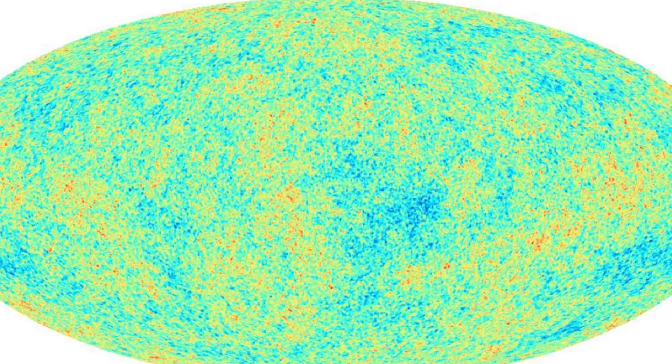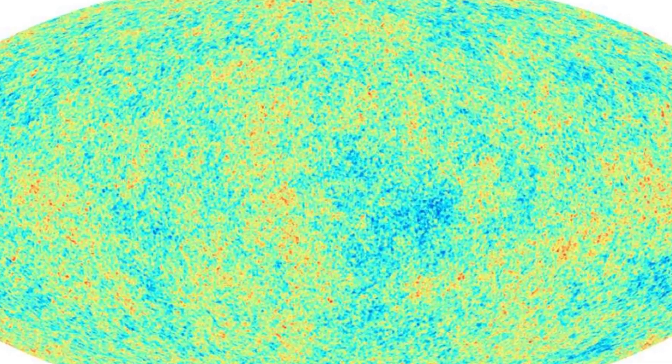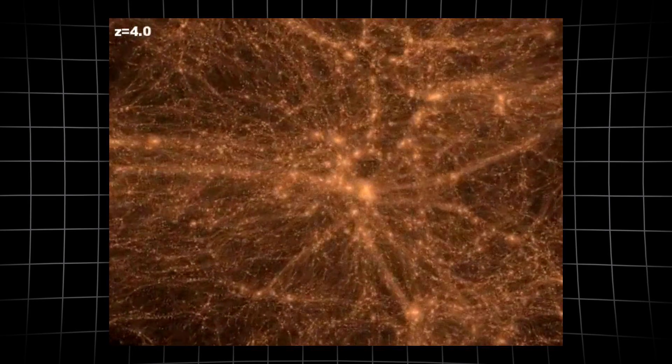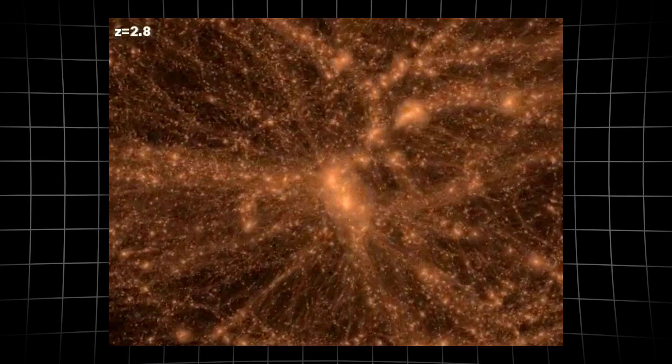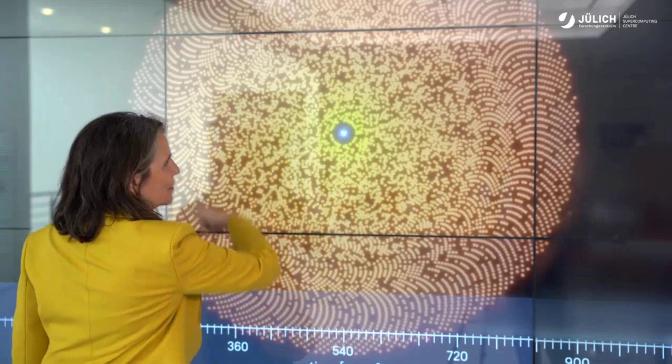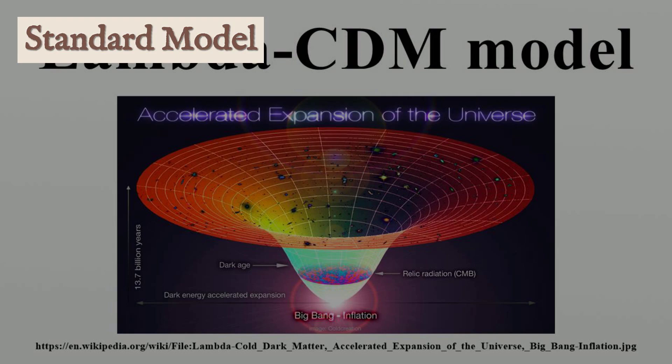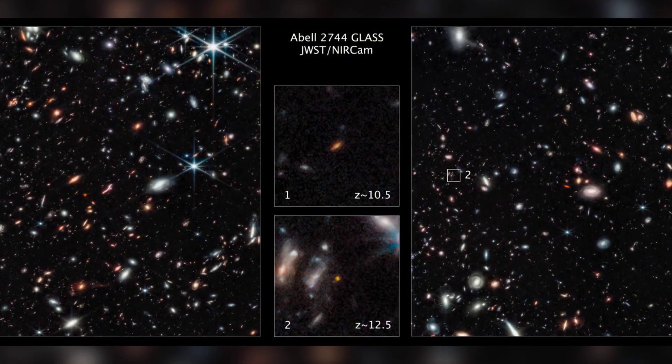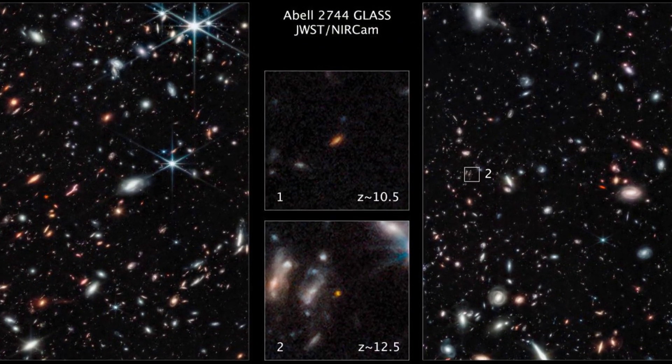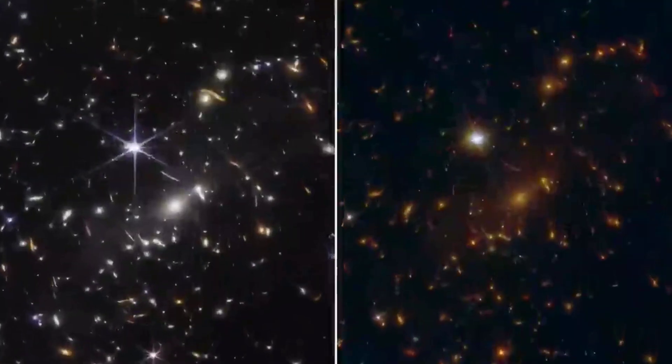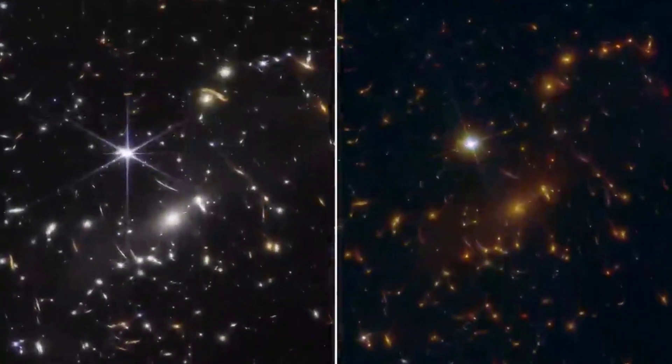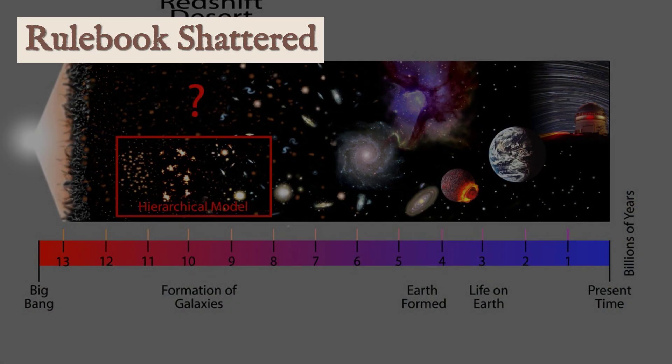The numbers are baked in: the universe starts smooth, dark matter clumps together, and only then do stars and galaxies form in earnest. Simulations built on these rules have been so successful they're called the standard model for a reason. But when Webb's data arrived, the math didn't just look off, it looked broken. The galaxies it spotted weren't tiny or chaotic. They were huge, organized, and already bustling with stars, all within the universe's first 500 to 700 million years.